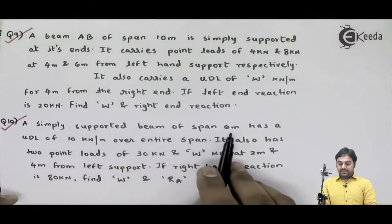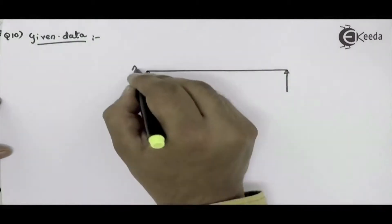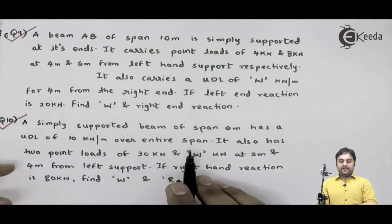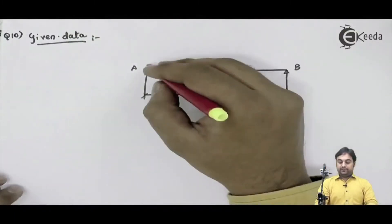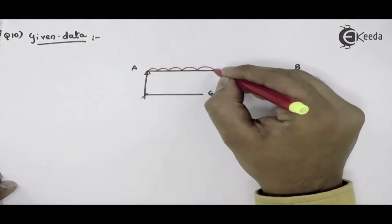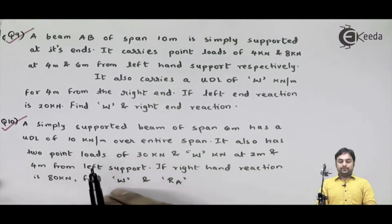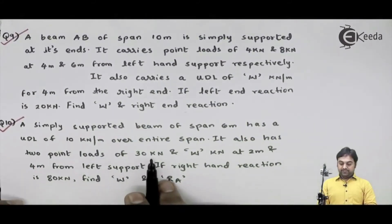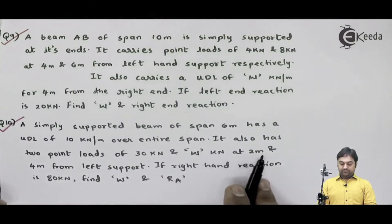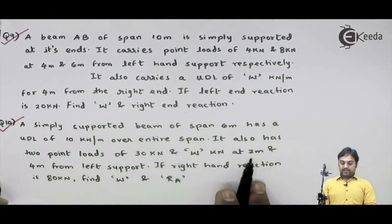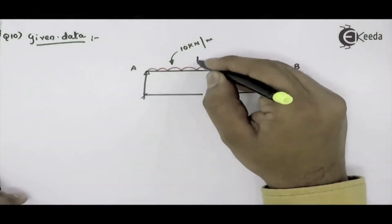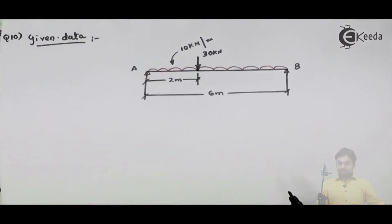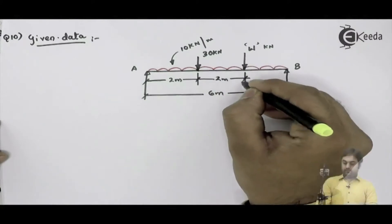A simply supported beam of span 6 meters has a UDL of 10 kilonewton per meter over the entire span of 6 meters — that is a uniformly distributed load with value 10 kilonewton per meter. It also has two point loads: 30 kilonewton at 2 meters from the left support, and w kilonewton at 4 meters from the left support.